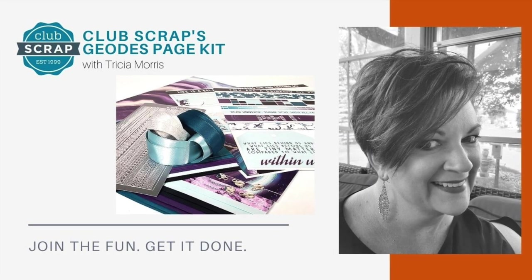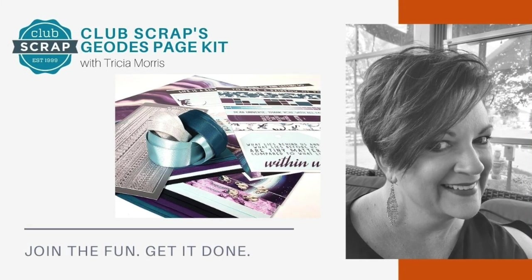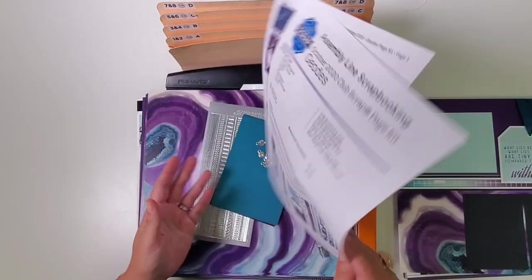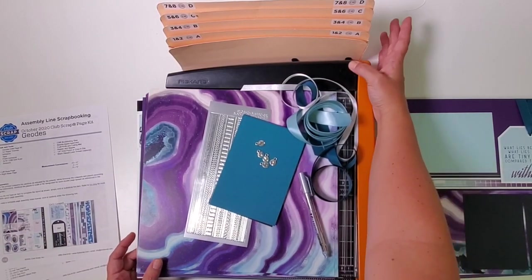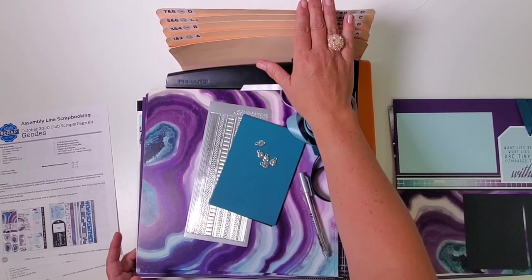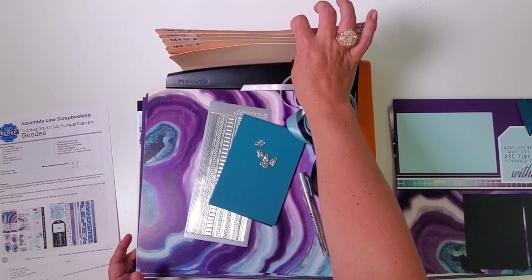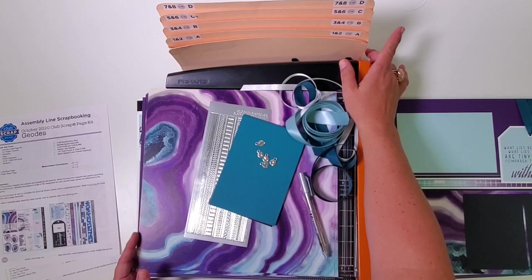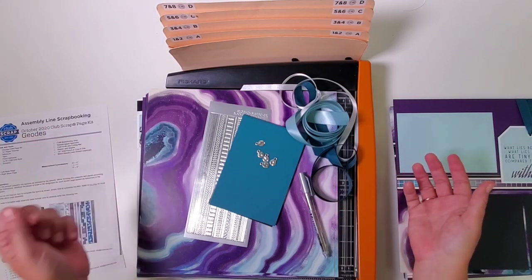Hey Club Scrappers! I'm Tricia Morris at Club Scrap and this is your workshop for the Geodes page kit. So hopefully by now you have your beautiful page kit. I've got a copy of the printed instructions available online, my 12-inch Fiskars trimmer, and the accordion pocket file organizer. If you don't yet have the materials you need to make your own accordion organizer, reach out to us at info@clubscrap.com. It's a wonderful organizational tool to use with our efficient system of scrapbooking.